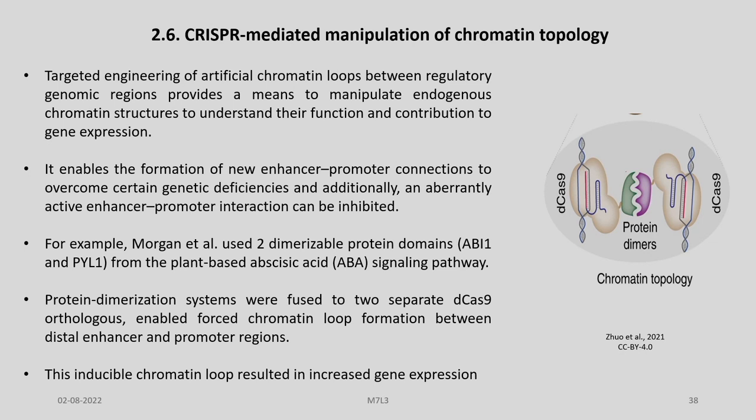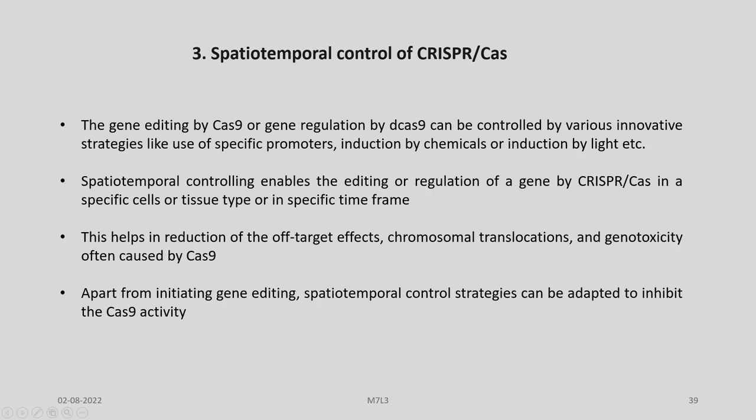This enables the formation of new enhancer-promoter connections to overcome certain genetic deficiencies, and an apparently active enhancer-promoter interaction can also be inhibited. Morgan et al. used two dimerizable protein domains ABI1 and PYL1 from the plant-based abscisic acid signaling pathway. Protein dimerization systems fused to two separate D-Cas9/gRNA enabled forced chromatin loop formation between the distal enhancer and promoter region, resulting in increased gene expression as the promoter and enhancer regions are brought into close proximity.